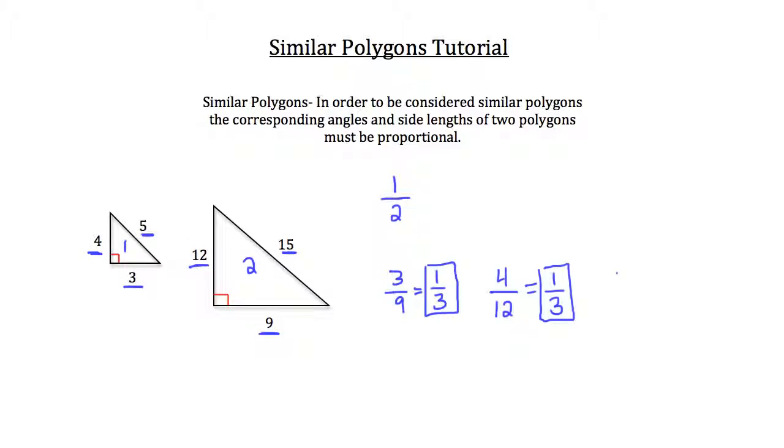So we'll compare 5 and 15, small triangle over large triangle. 5 over 15 reduces to 1 over 3 again. So if you were to come across these two triangles, one having lengths of 3, 4, and 5, let's say inches,